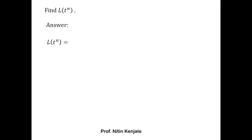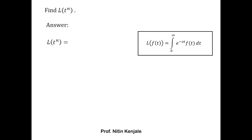Here t raised to n represents a polynomial in t with degree n. We write Laplace of t raised to n in its integral form. Recall the Laplace transformation integral definition: Laplace of f(t) is equal to the integral of e raised to minus st into f(t) dt over the limit zero to infinity. We put f(t) equal to t raised to n to have L{t^n} equal to the integral of e^(−st) · t^n dt from zero to infinity.